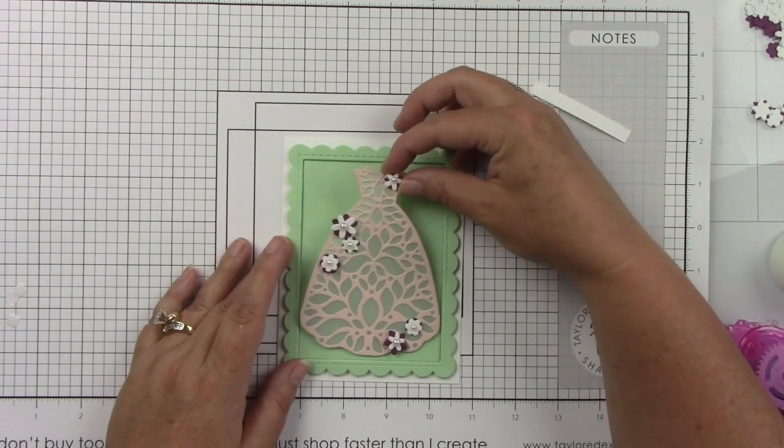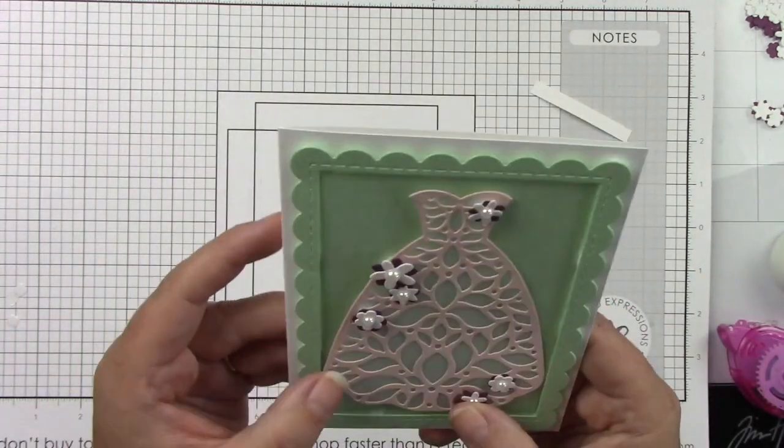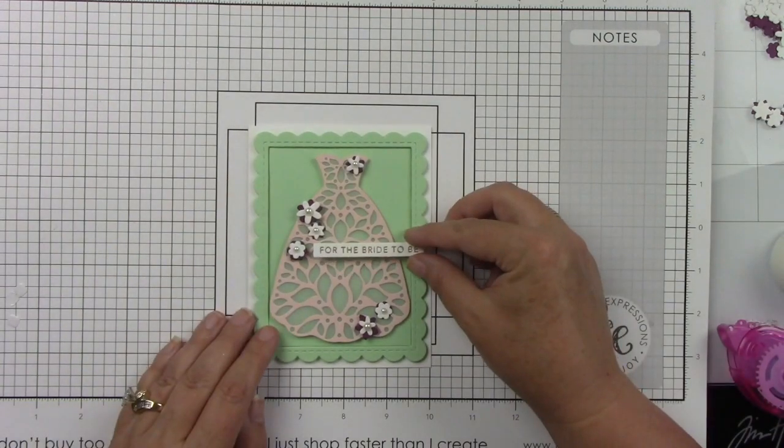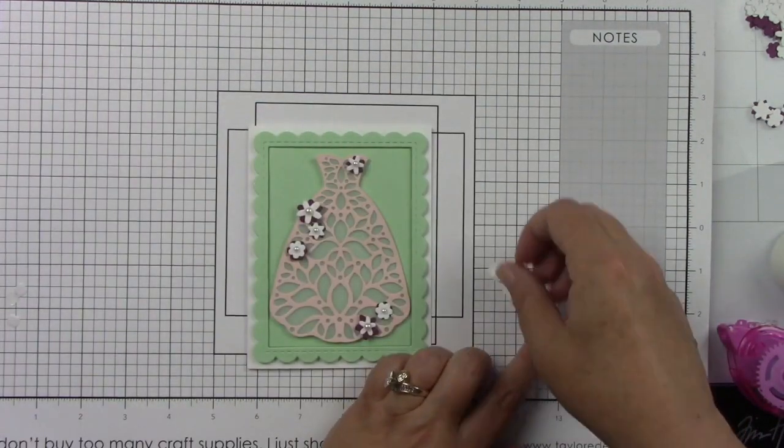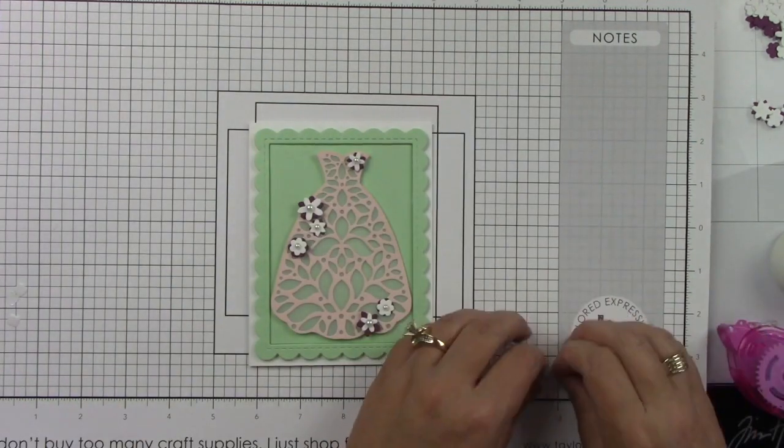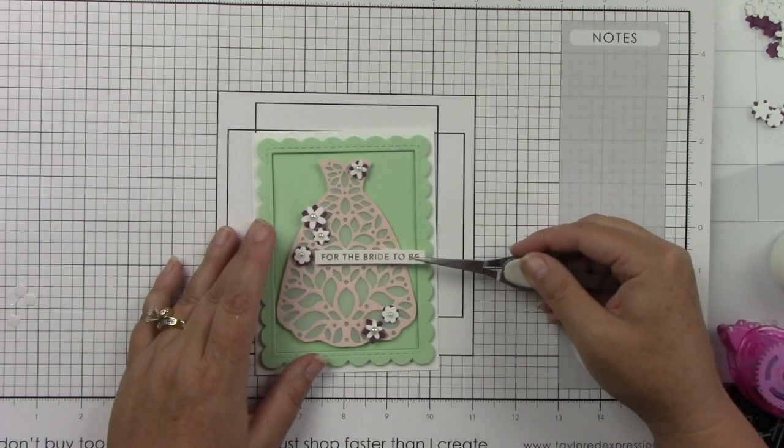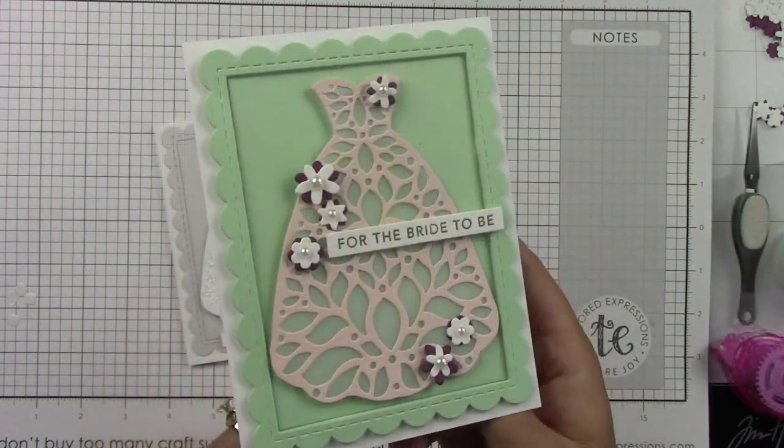And then I can just center that right in the middle of the Mint Julep cardstock. And then this sentiment says "for the bride to be." I really liked this card because it felt much more playful and you could definitely give this card at like the bridal shower and that could be just specifically for her, where the other one is actually a wedding card.